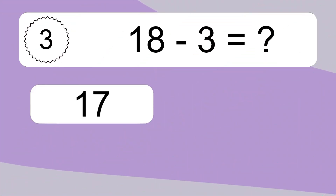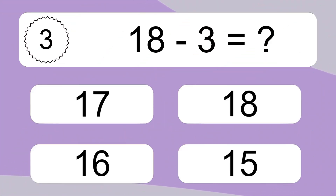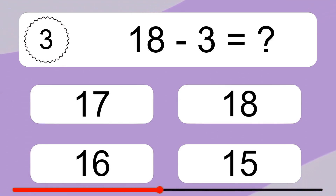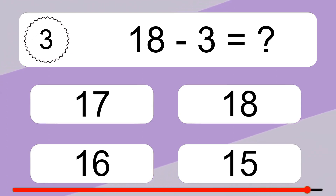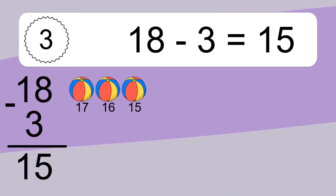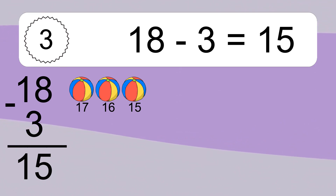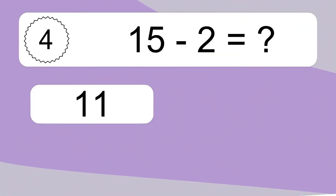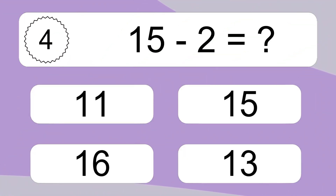18 minus 3 equals what? 18 minus 3 equals 15. Let's count it: 17, 16, 15.